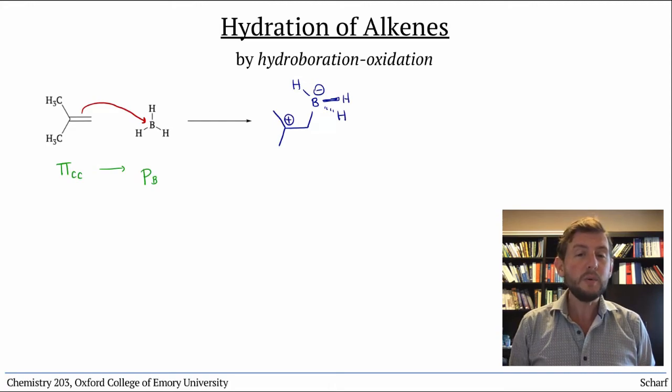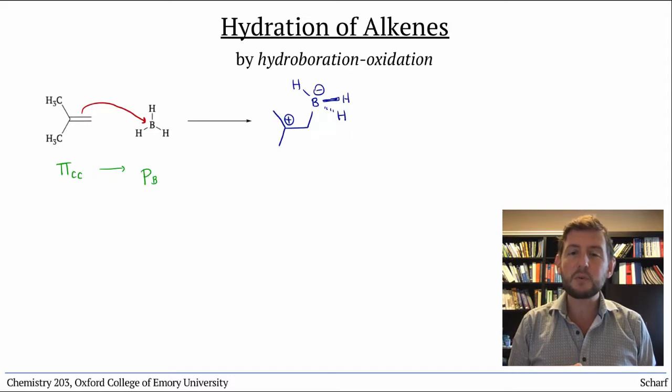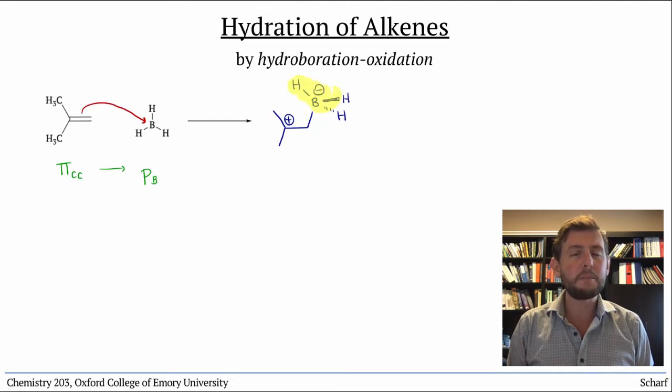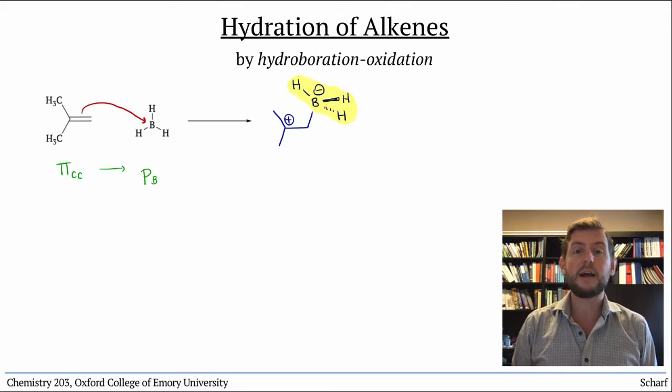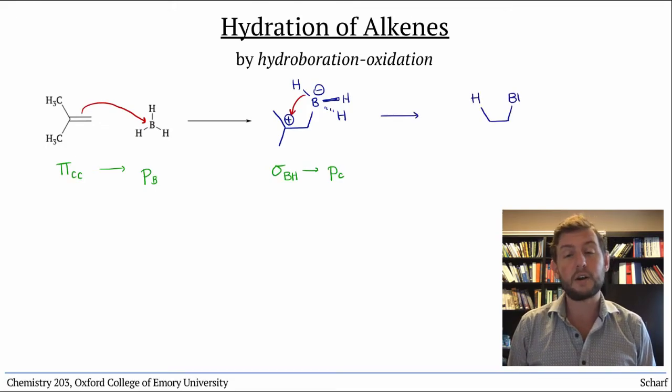Do you see what happens to the boron? It gets a negative formal charge in this process, and looks an awful lot like borohydride, BH4-. Which we know has a pretty high energy HOMO, sigma BH. That orbital can interact with the empty P orbital of the carbocation, transferring a hydrogen over to that carbon.